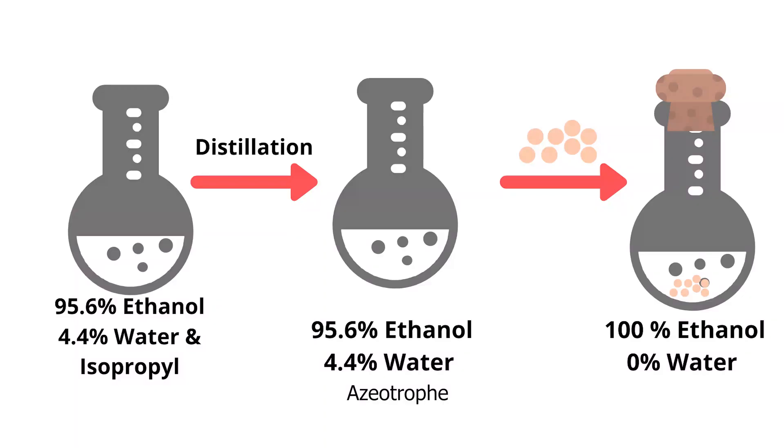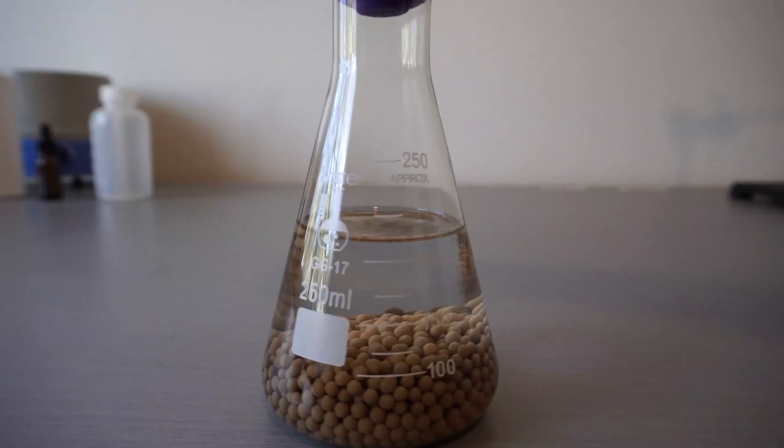This means I will first need to distill out the isopropyl before drying out the mixture with molecular sieves. This includes storing it over the sieves after the distillation is done. So that's exactly what I did.